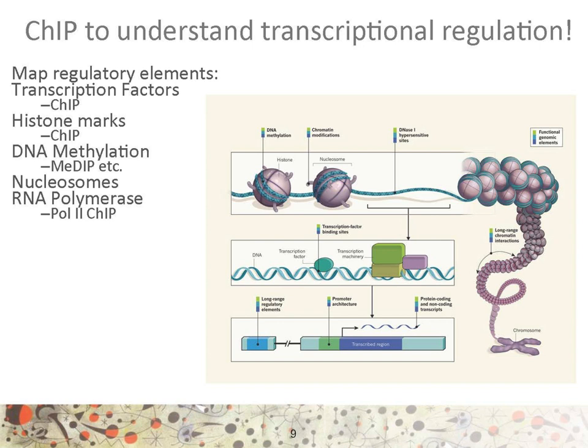ChIP helps us understand transcriptional regulation at many levels. DNA is differently compacted in the cell nucleus. Some regions are less compacted — so-called open chromatin — and this is usually associated with a region being active or transcribed. In compacted chromatin regions, the DNA often harbours methylation on cytosines. The DNA is wrapped around nucleosomes, which are complexes of histone proteins. The histones can harbour modifications too, commonly methylation and acetylation, but not only. These distinct modifications have been associated with different chromatin structure and roles.